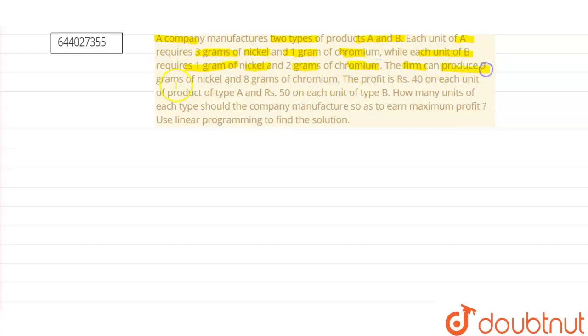The firm can produce 9 grams of nickel and 8 grams of chromium. The profit is rupees 40 on each unit of product type A and rupees 50 on each unit of type B. How many units of each type should the company manufacture so as to earn the maximum profit? Use linear programming to find the solution.